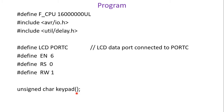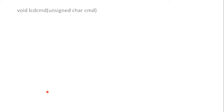Next, declare the keypaid function as unsigned char return type. Whenever this function is called, it will return the value of the pressed key. If a function doesn't return anything, you write void; here we need unsigned char because we are returning the pressed key value.